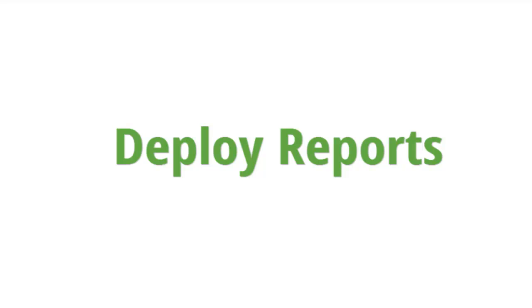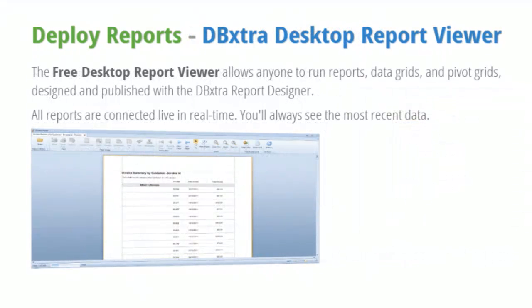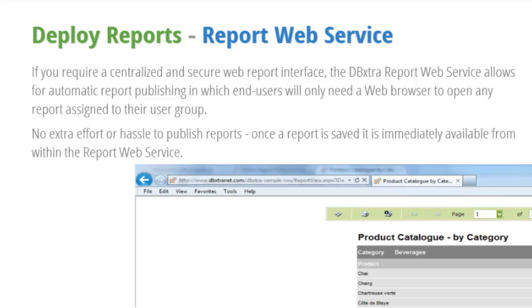Deploy reports without extra effort. End users can view reports with a free desktop report viewer or use the advanced functionality of the report web service, a web-based reporting interface that allows for the easy deployment of secure and interactive reports on any web browser. Get key business metrics reports when and where you need them. If you require a centralized and secure web report interface, the DB extra report web service allows for automatic report publishing in which end users will only need a web browser to open any report assigned to their user group. No extra effort or hassle to publish reports — once a report is saved it is immediately available from within the report web service.